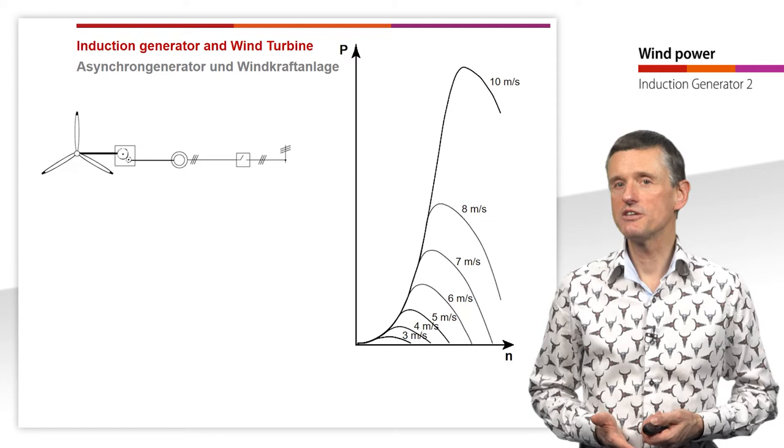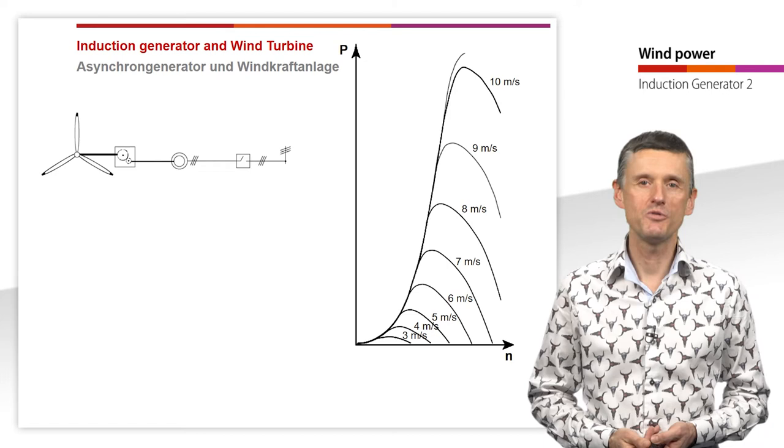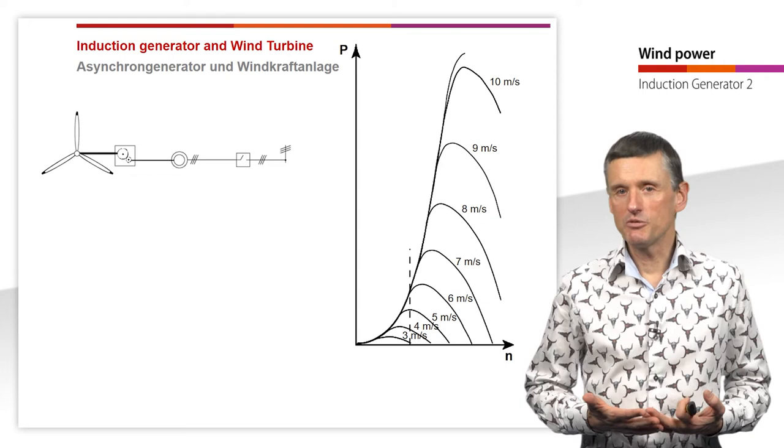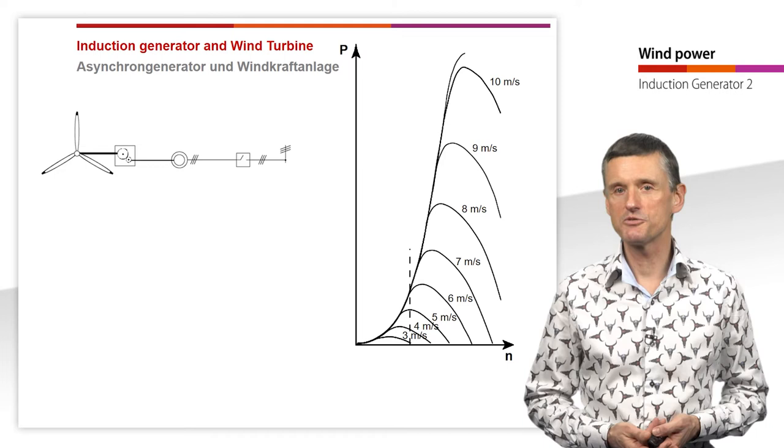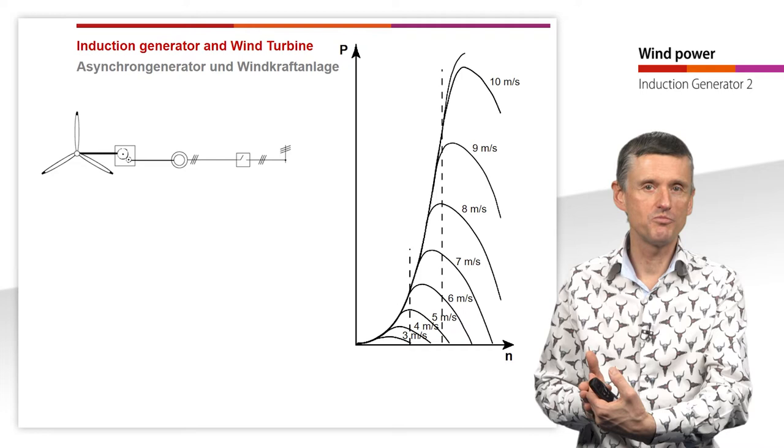But we have many different wind speeds, and when we have a look, we see that for all wind speeds we have this behavior: there is always at a certain mechanical speed a maximum of power we can produce. But when we optimize our system for 5 meters per second at this given mechanical speed, then it is not good when we have 8 meters per second, then another fixed mechanical speed would be much better.